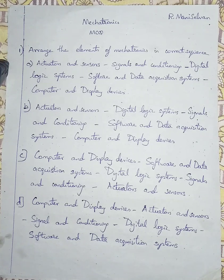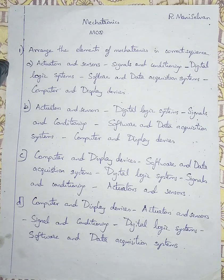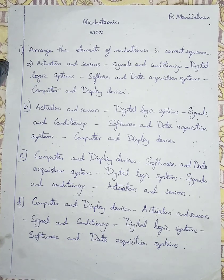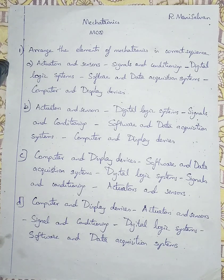Then it is followed by signals and conditioning. What type of signal — whether mechanical, electrical, or pressure — will be sensed and conditioned. If the signal is too low, it will be amplified. That is done by the signal and conditioning system. Then comes the digital logic system, where signals are converted into suitable digital form. Digital systems consist of microcontrollers and logic circuits which control the overall system.